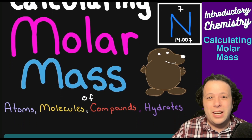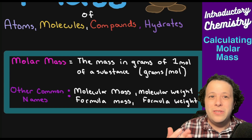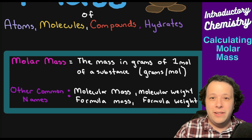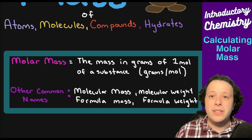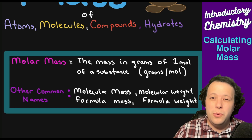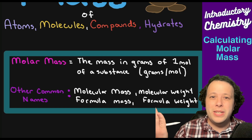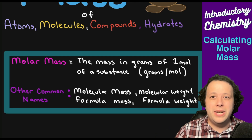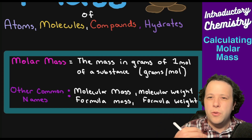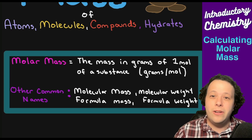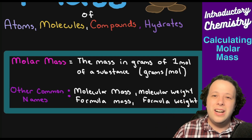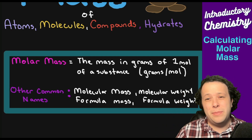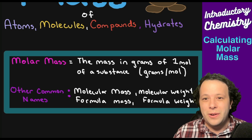Molar mass is the mass in grams representing one mole of a particular substance — grams per mole. This can come under many different names depending on your chemistry professor: molecular mass, molecular weight, formula mass, formula weight. They all refer to the same general concept and all use your periodic table. We'll focus on grams per mole and how to do those conversions, which will be required later for mole conversions.